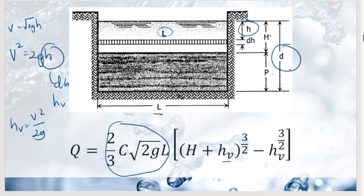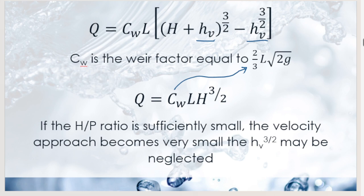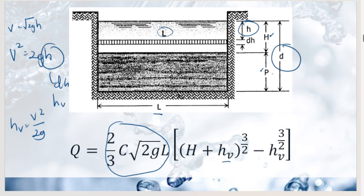The Sutro weir, also called the proportional flow weir or Rehger weir, has hyperbolic sides. In a rectangular weir, discharge varies with H^(3/2); in triangular with H^(5/2). The Sutro weir achieves proportional flow. Its actual discharge is: Q = C·π·k·√(2g·h), where k = 2x·√y from the hyperbola equation. This makes discharge directly proportional to h.